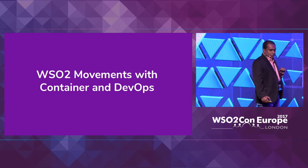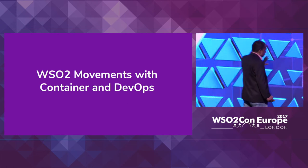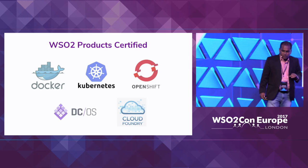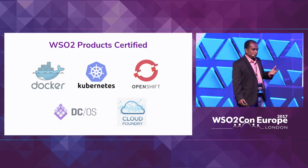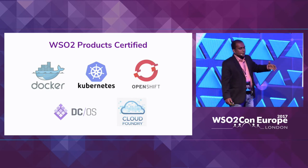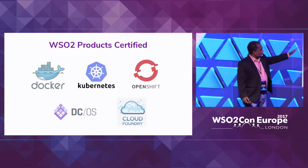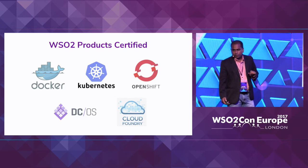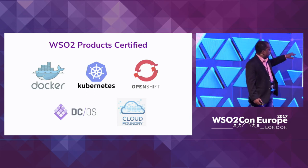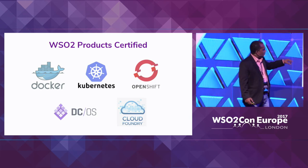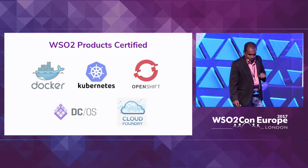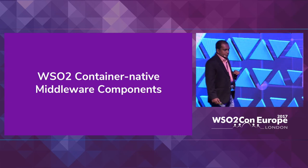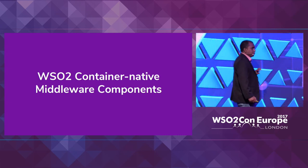When it comes to WSO2, we currently support our current product stack — for example, APIM version 2 and other current products — with container management systems for production and development environments. We are releasing Docker artifacts, Kubernetes artifacts, OpenShift artifacts, DC/OS artifacts, and Cloud Foundry artifacts for different container management systems. Now I will talk about the future architecture and how we're going to adapt to container-native applications.